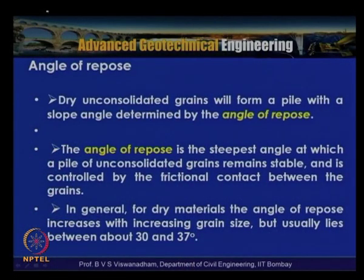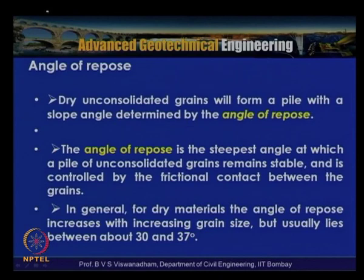We have a particular angle called the angle of repose. Dry unconsolidated grains will form a pile with a slope angle determined by the angle of repose. When a heap is formed with completely dry sand, the angle subtended with the horizontal is called the angle of repose — the maximum angle the sand can make. The angle of repose is the steepest angle at which a heap of unconsolidated grains remains stable, and is controlled by the frictional contact between the grains.